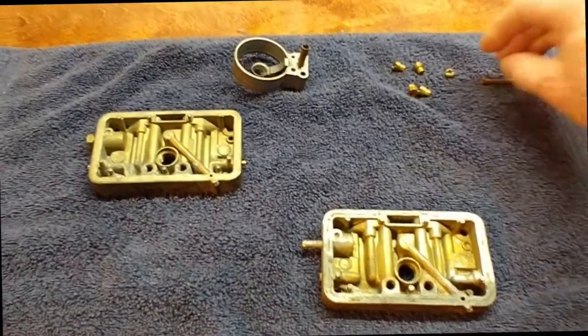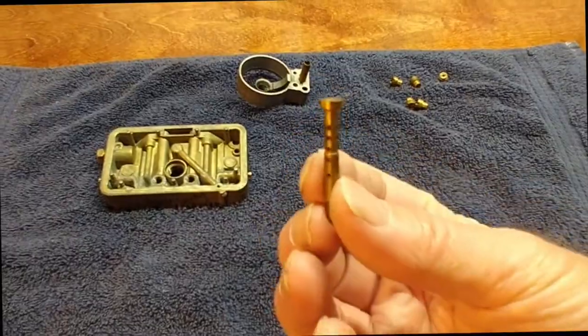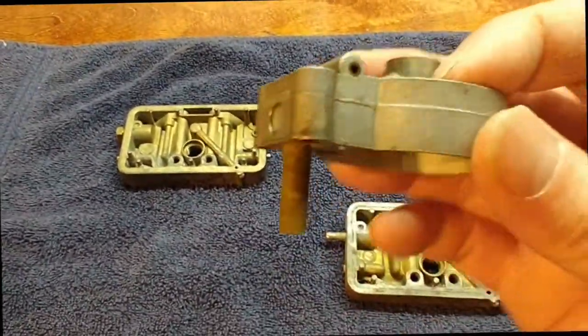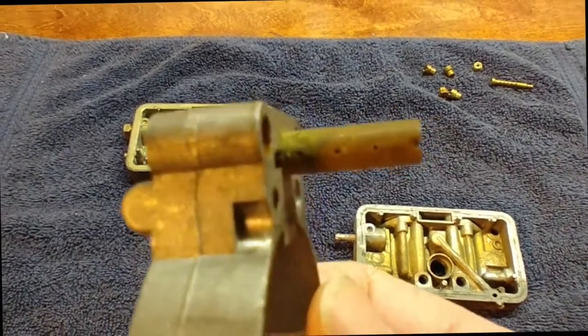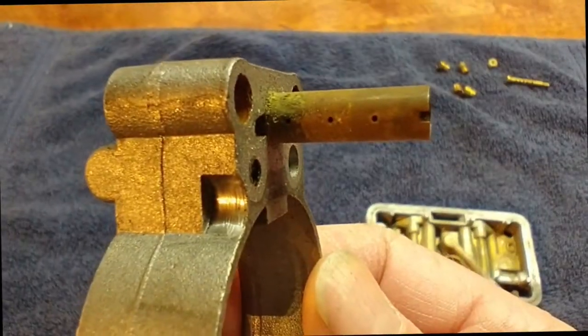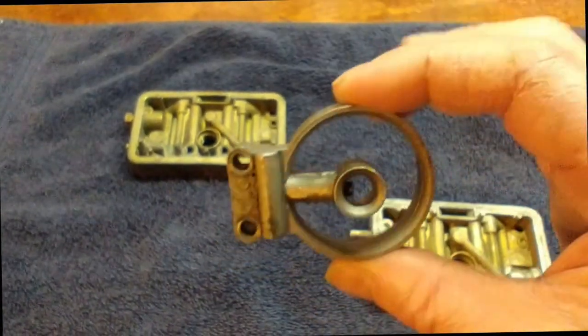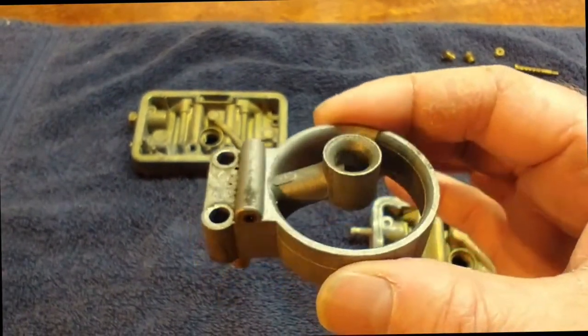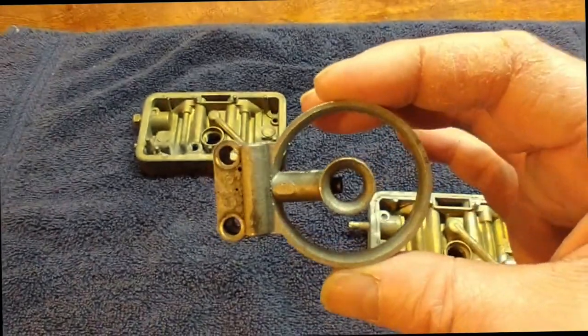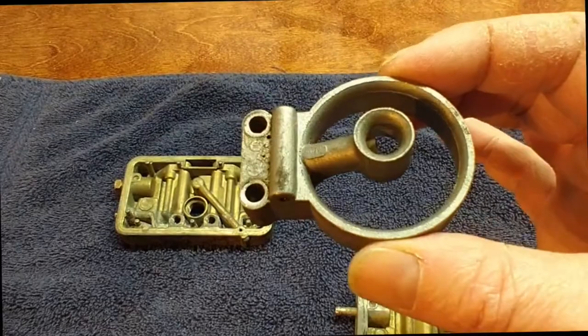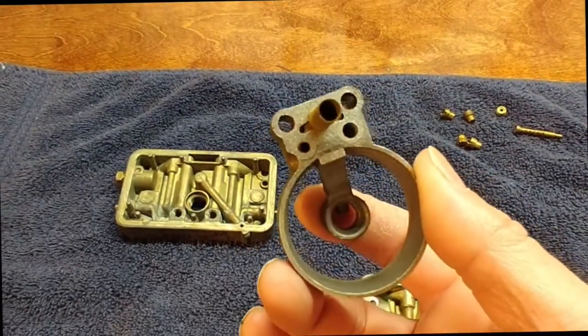So this is an example of a Weber well tube. This is an Edelbrock. You can see the Edelbrock has holes just like the Weber. This is out of an Edelbrock four barrel. I believe that this is a secondary. So you can see we have the secondary venturi, the secondary booster, which is attached to the well tube.